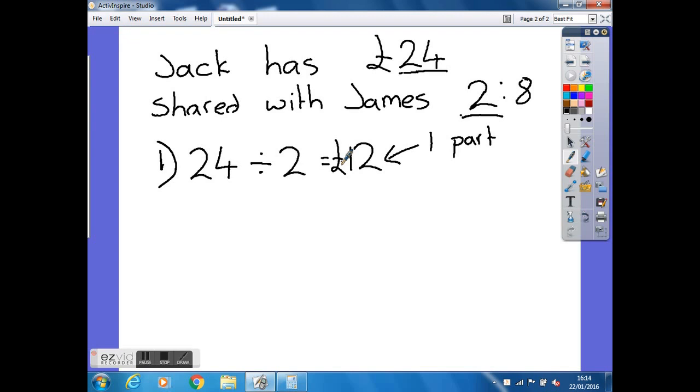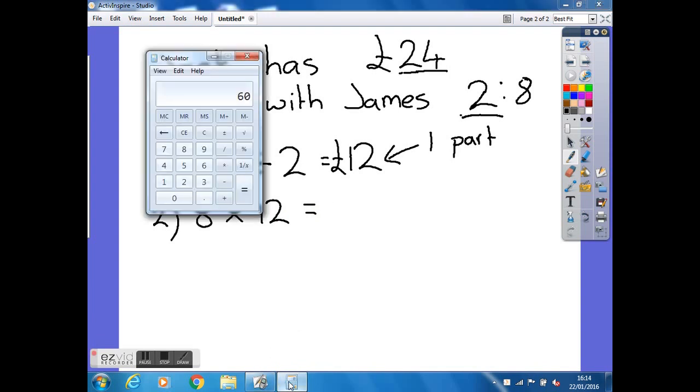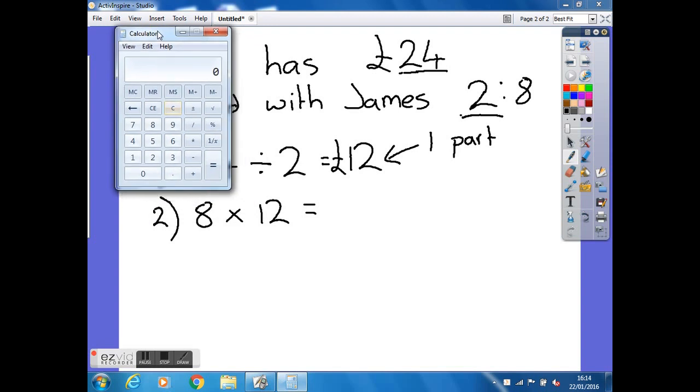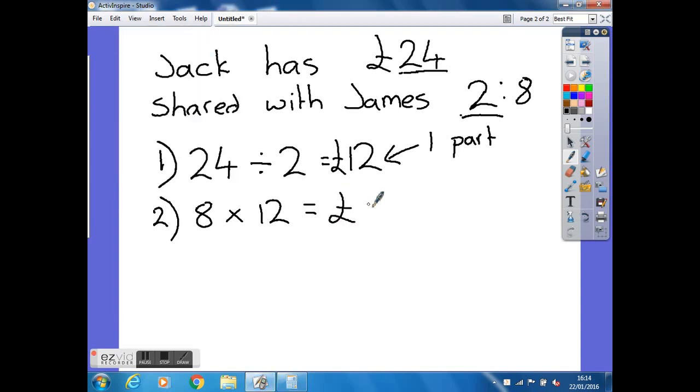So if James is after 8 parts, we can do the same thing again. We can do 8 multiplied by 12. Again, remember you can use your calculator for this, which gives us £96.